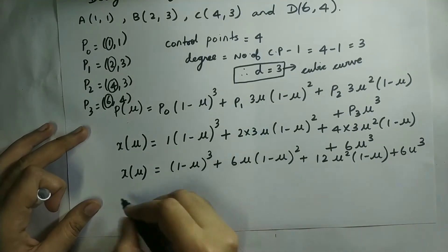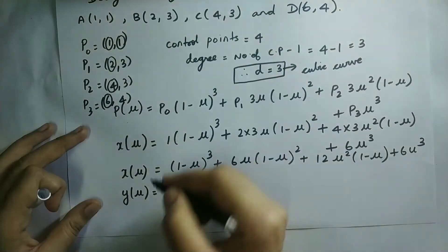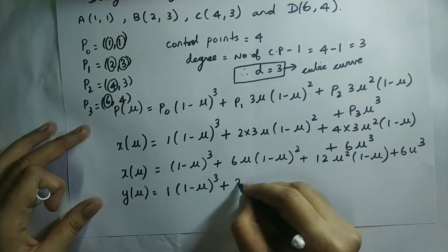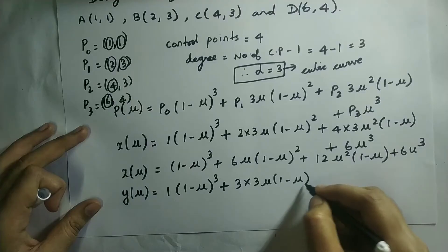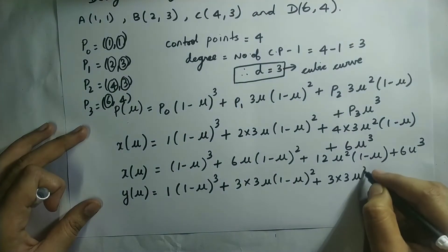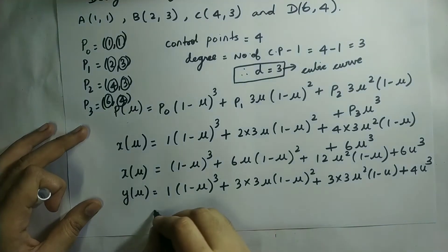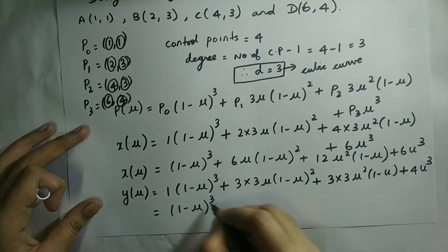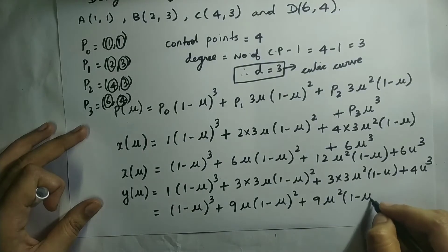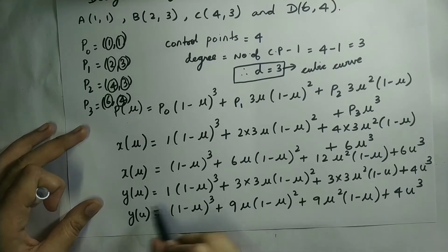Now we calculate y(u). In place of P0 I substitute its y-coordinate which is 1, P1's y-coordinate is 3, P2's y-coordinate is 3, and P3's y-coordinate is 4. So y(u) = 1·(1−u)³ + 9u·(1−u)² + 9u²·(1−u) + 4u³.